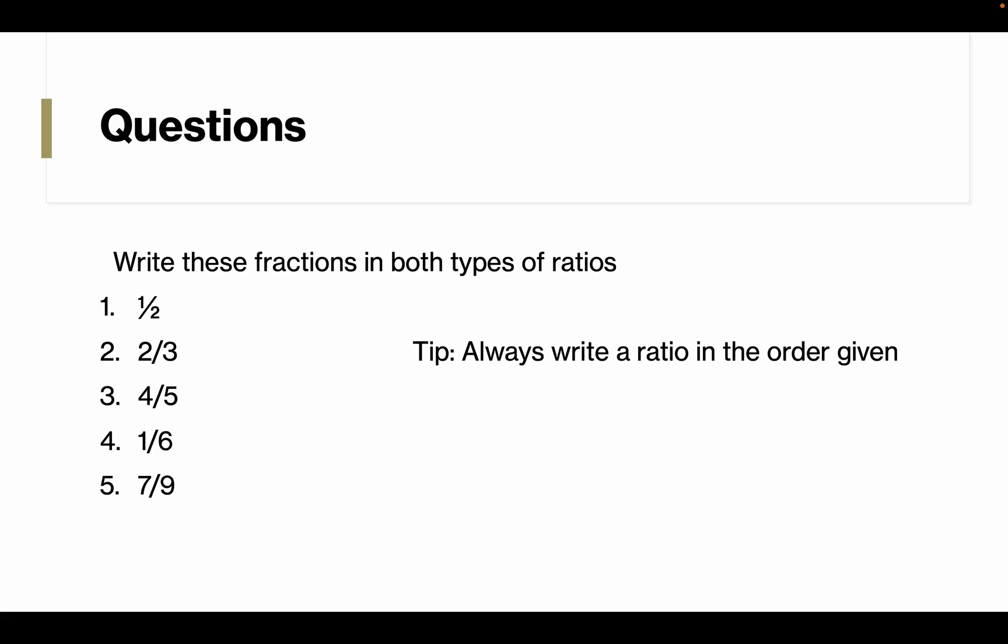Here are some questions on the two types of ratios. Please write these fractions in both types of ratios. A tip is always write the ratio in the order given. That means if there was seven-eighths, for example, you would do seven is to eight, not eight is to seven.